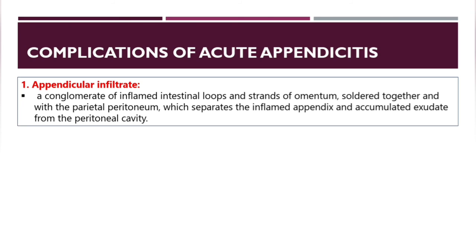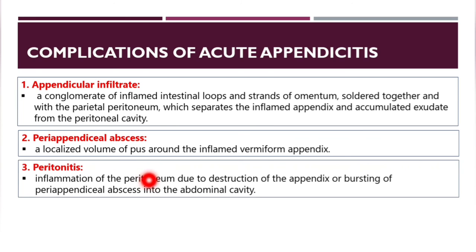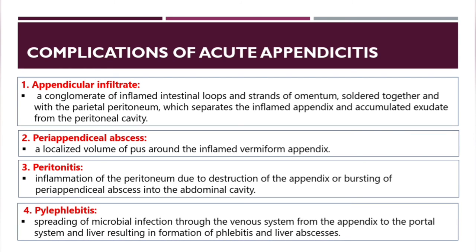Complications of acute appendicitis: appendicular infiltrate — a conglomerate of inflamed intestinal loops and omental strands separating the inflamed appendix and exudates from the peritoneal cavity. Peri-appendiceal abscess — a localized volume of pus around the inflamed appendix. Peritonitis — inflammation of the peritoneum due to perforation of the appendix or bursting of a peri-appendiceal abscess. Pylephlebitis — spread of microbial infection through the venous system from the appendix to the portal system and liver, resulting in phlebitis and liver abscesses.